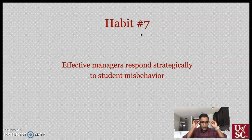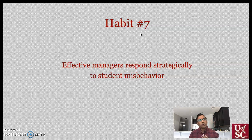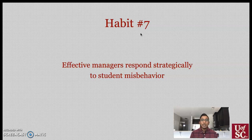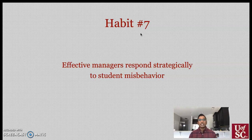Habit seven: we want to respond strategically to student misbehaviors. Once we detect a behavioral incident, we want to quickly and briefly address it. Keep a neutral affect — we don't want to raise our voice, but we don't want to come in too soft either. Provide the prompt for a correct behavior and then leave. The moment the student engages in what we asked, we inundate them with praise. If they don't comply, restate the directive, maintain that neutral affect, and then leave — we don't want to engage in power struggles, as these can be detrimental to positive student rapport.